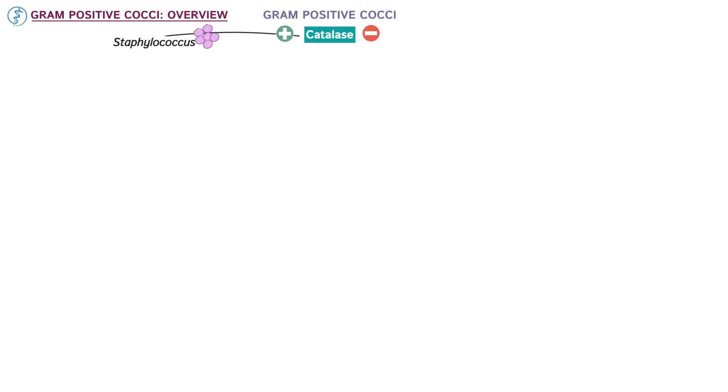To begin, gram-positive cocci can first be categorized as catalase positive or catalase negative. Catalase positive cocci include species of Staphylococcus. Catalase negative cocci include species of Streptococcus and Enterococcus.